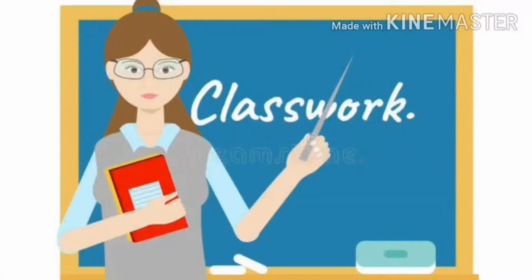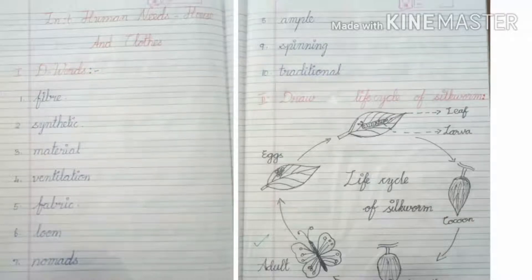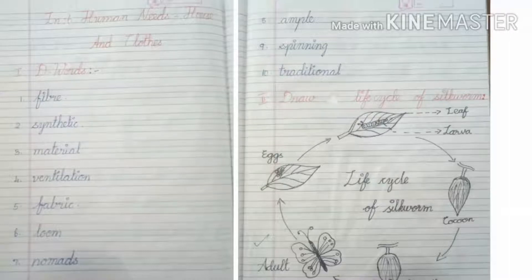Children, now let's start the classwork. Take your EBS classwork book and turn to a new page. In the last video class, we completed the first and second questions. So now let's start from question three.